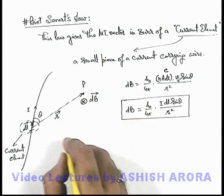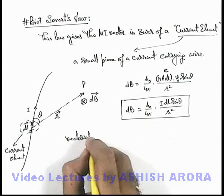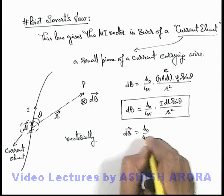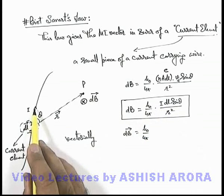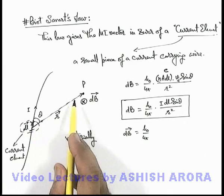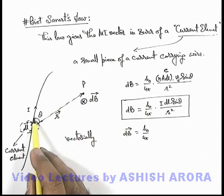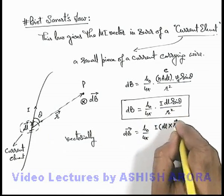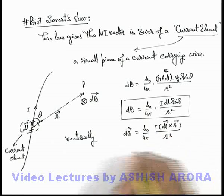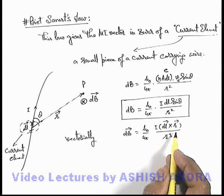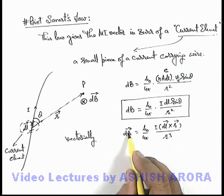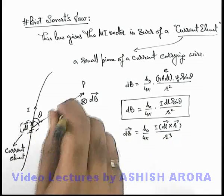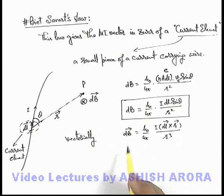And it can also be expressed vectorially. Here we can vectorially write as dB vector is mu not upon 4 pi, I dl sine theta. In this situation dl is along the direction of current and r vector is in the direction of point P, the angle between these is theta. This can be written as I dl cross r divided by r cube. Here also I have written it in the similar way as we have written the magnetic field vector for a moving charge. Here the direction of dl cross r will be in the direction into the plane of this paper, that is in the direction of magnetic field.